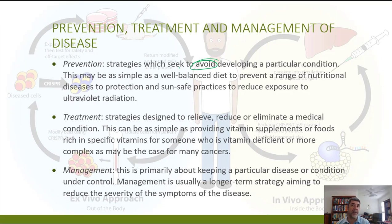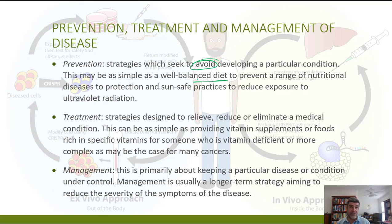Sometimes there are public health campaigns to help raise awareness about risk factors and ways you can try to prevent the development of a disease in the first place. That could be as simple as having a well-balanced diet to ensure you get your range of vitamins and minerals, or adopting sun-safe practices to reduce exposure to ultraviolet radiation. Prevention is something we seek to do, but not something we're always successful at.